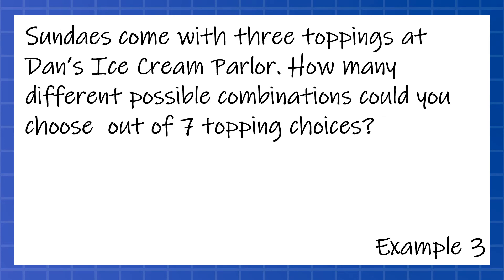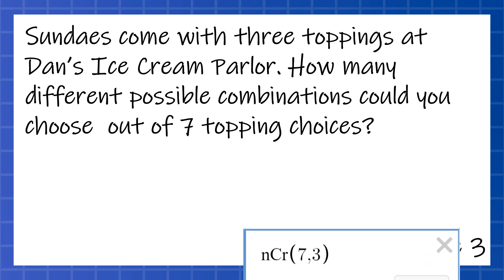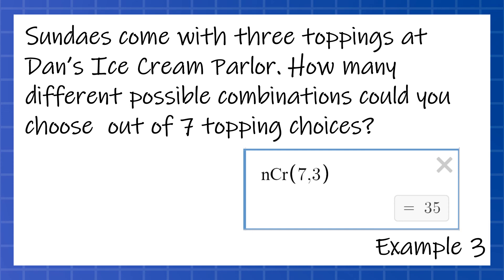Sundaes come with three toppings at Dan's Ice Cream Parlor. How many different possible combinations could you choose out of seven topping choices? So this is a combination. You could argue the order you put the toppings in makes a difference — like if you put the chocolate on first and then the whipped cream — but we're going to treat this like a combination because you're going to tell the person to put them on, and they're just going to put them on without worrying about the order. So we type in NCR 7 choose 3, and our answer is 35 different choices.